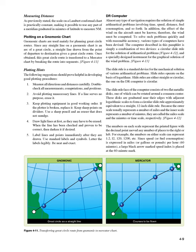DR Computer: almost any type of navigation requires the solution of simple arithmetical problems involving time, speed, distance, fuel consumption, and so forth. In addition, the effect of the wind on the aircraft must be known. Therefore, the wind must be computed. To solve such problems quickly and with reasonable accuracy, various types of computers have been devised. The computer described is a combination of two devices: a circular slide rule for the solution of arithmetical problems (Figure 4-12), and a specially designed instrument for the graphical solution of the wind problem (Figure 4-13).